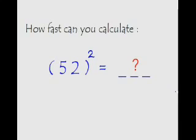So far we have covered the faster way of finding the squares of numbers from 1 to 30. In this class we would be learning how to calculate the squares of any number between 30 to 70 at extremely fast speed.